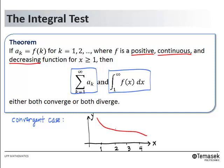We are going to sketch rectangular strips in this manner. Here the first rectangular strip has an area of a_2, followed by a strip with area a_3, then a_4. Continuing, we have strips with areas a_5, a_6, a_7, and so on. Hence, the sum of all these rectangular strips will be the infinite series of a_k starting from k equals 2 onwards.